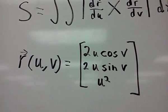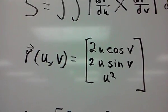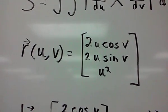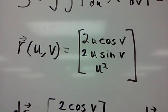So r is given to you as the r vector of u and v. It's 2u cosine v, 2u sine v, and u squared.